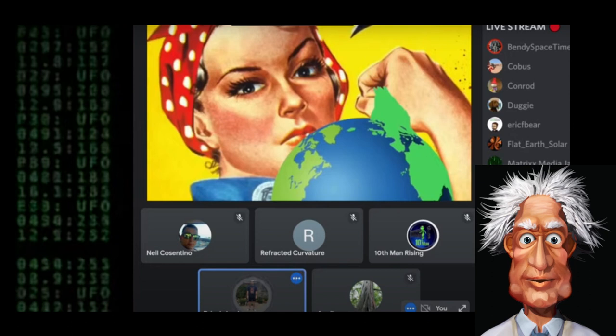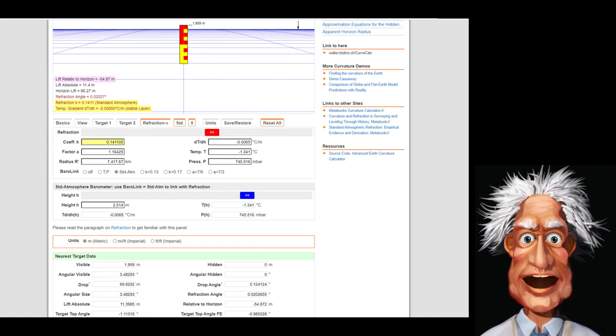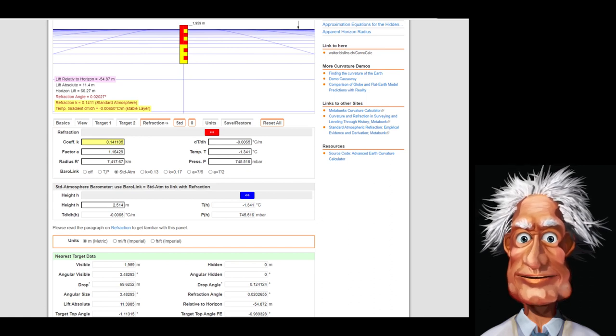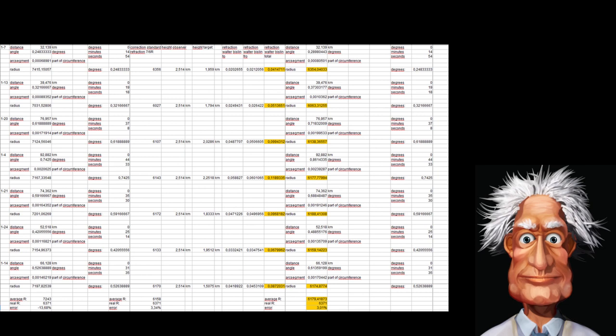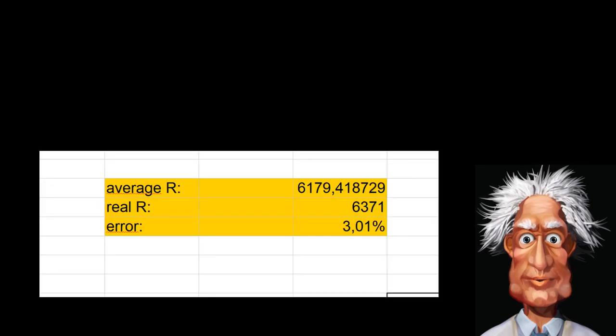Most flat earthers don't agree with this method because they falsely claim that it presupposes r. So there is a better, more accurate way, and that is to calculate the refraction angle using factors like the atmospheric pressure and the temperature lapse rate. Using the results of these calculations, based on the advanced earth curvature calculator of Walter Bislin, we find a radius r of 6,179 kilometers, that's around 3% less than the generally accepted value of 6,371.